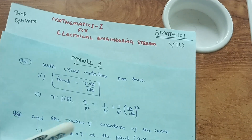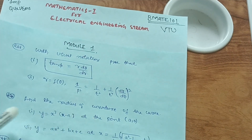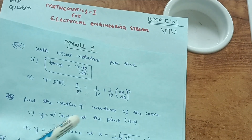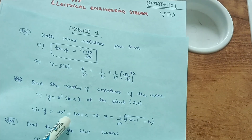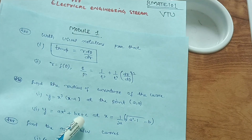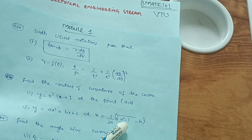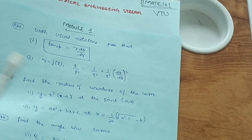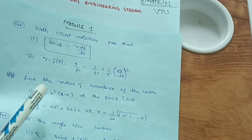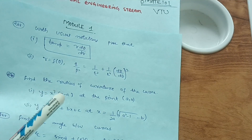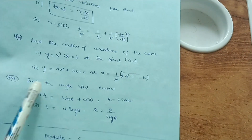Then focus on a variety of questions on radius of curvature. For example, find the radius of curvature of the curve y = x³(x − a) at the point (a, 0). Another example: y = ax² + bx + c at x = 1/(2a) × √(a² − 1) − b. Try three to four problems from this concept. Module 1 has a vast syllabus so focus on just these key concepts — radius of curvature is the second concept.